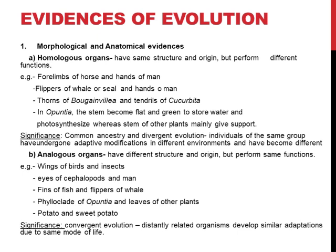These evidences are of different types. We have morphological and anatomical evidences, we have paleontological evidences, we have embryological evidences, we have biogeographical evidences, and we have molecular or genetic evidences. All these five types of evidences we have, and one by one we will be dealing with all the types of evidences.